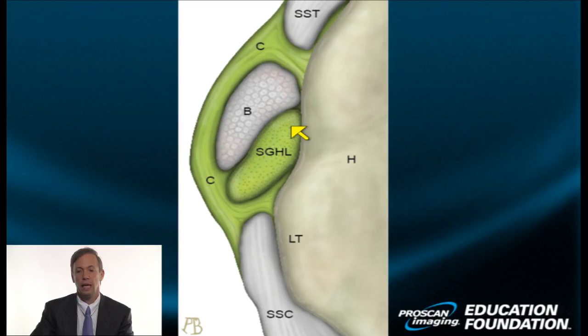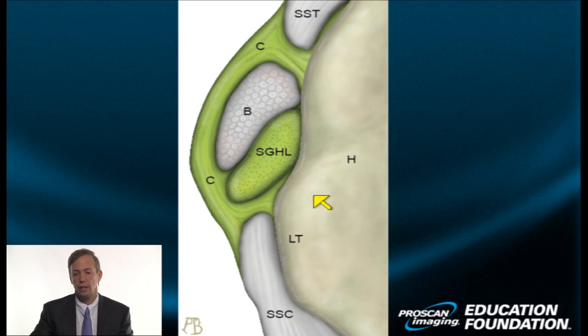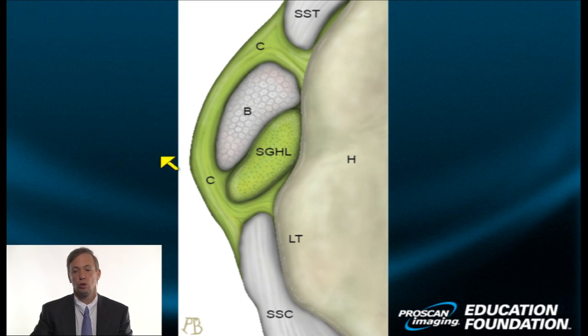Let's take one other advanced anatomic concept. You've heard about the posterior interval, the posterior inferior interval between groups of muscle bundles, and the anterior interval — the space between the supraspinatus and the subscapularis, found anteriorly. Here's the humeral head oriented with superior or craniad at the top, inferior or caudad at the bottom, and anterior to posterior.